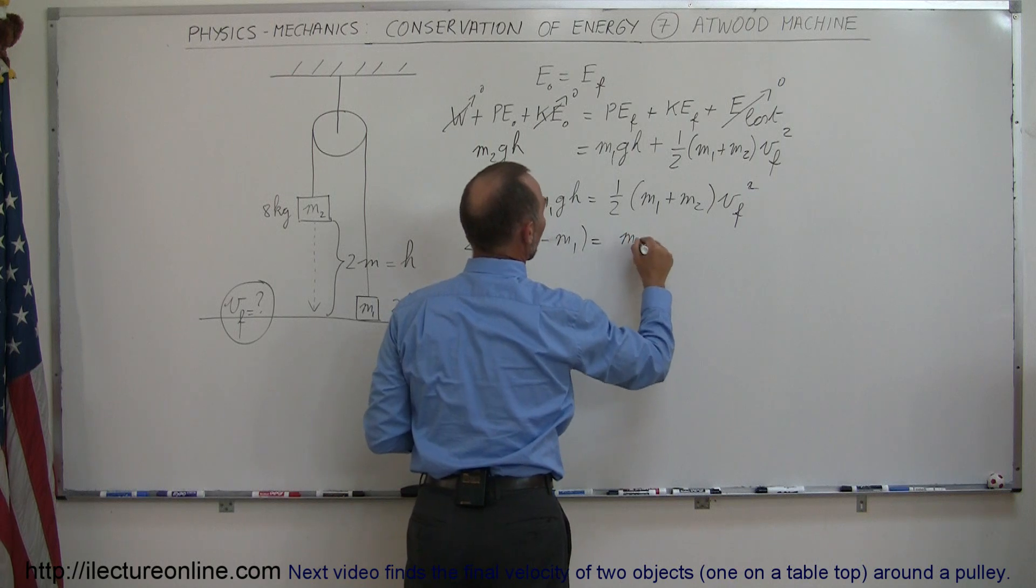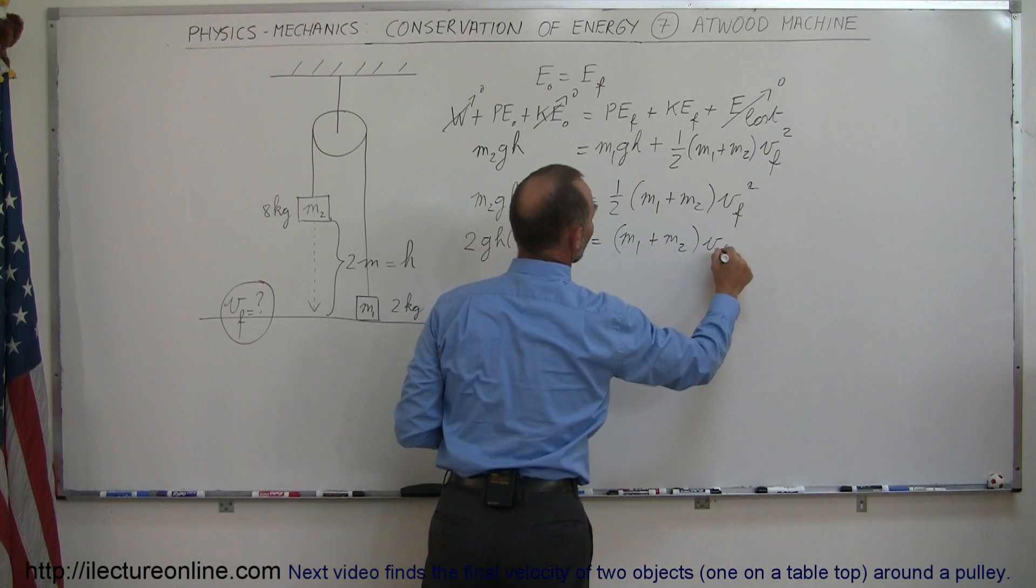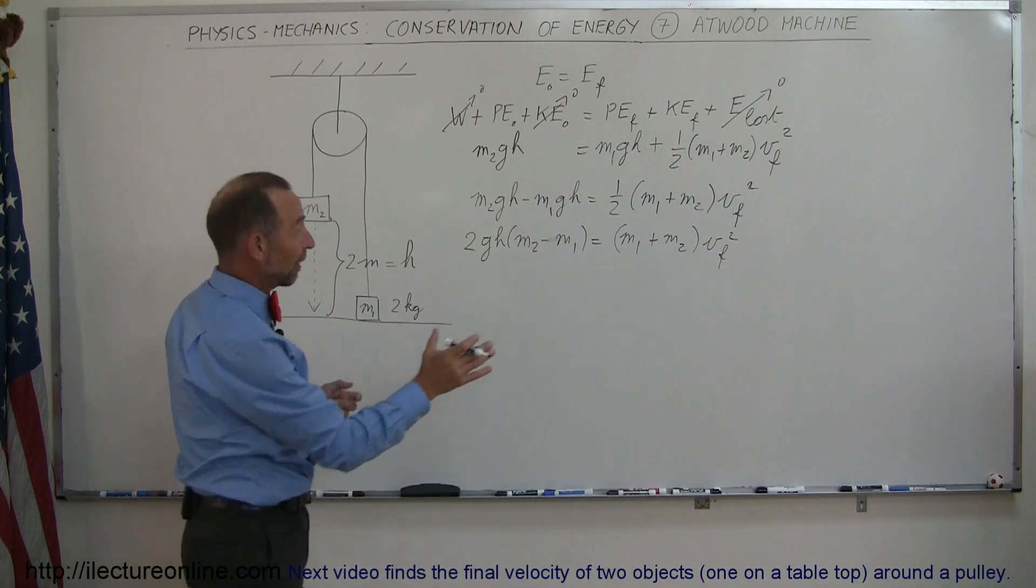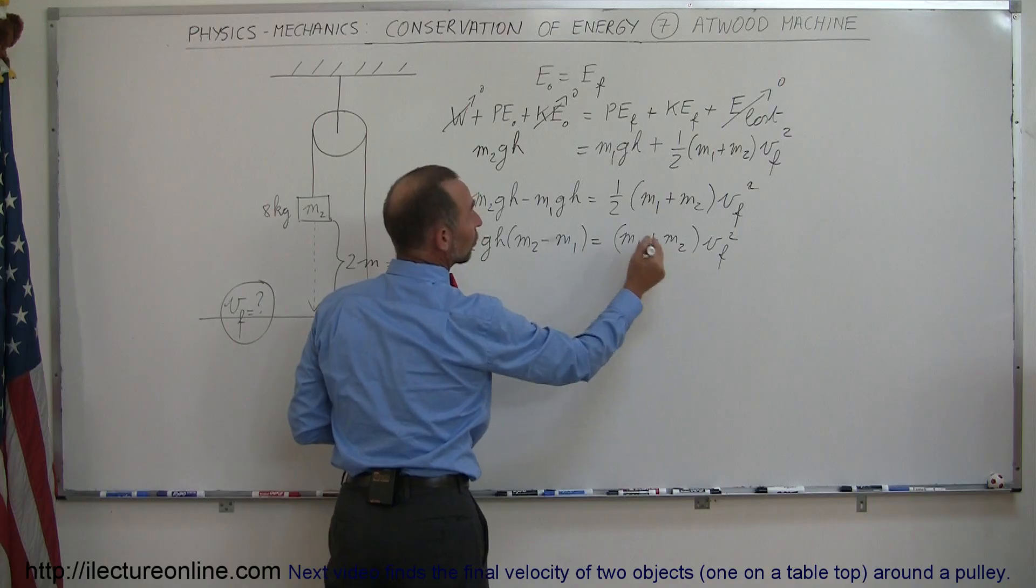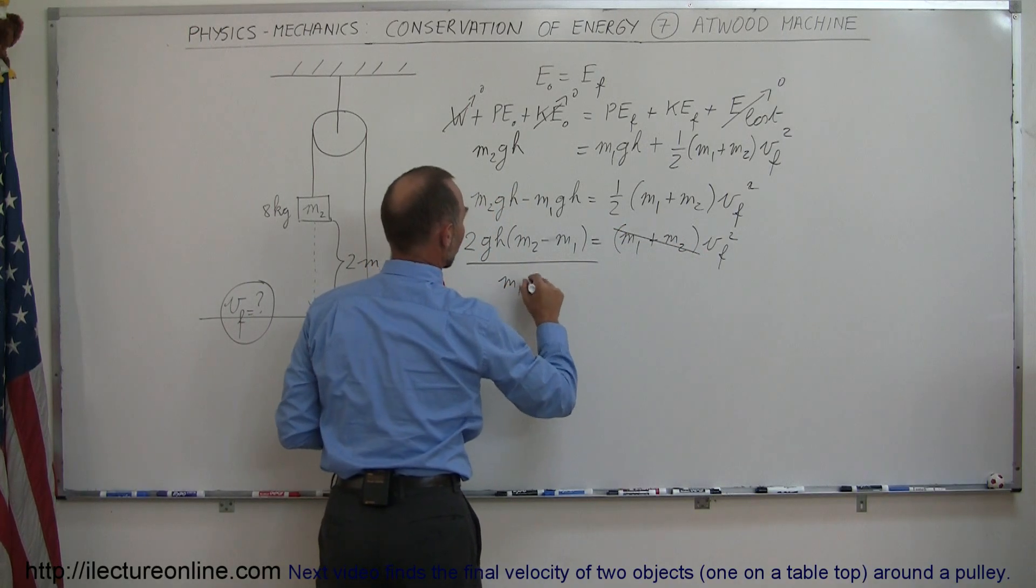So now we have M1 plus M2 times V final squared. So now we're going to take, what we're going to do now is divide both sides by M1 plus M2, so this disappears and ends up over on this side, M1 plus M2.